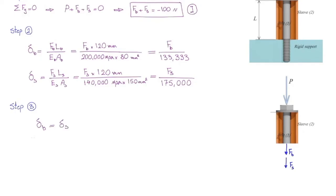And I can plug the values from the deformation that I got in step number two and write it like this. FB over 133,000 is equal to Fs divided by 175,000. And I can simplify that into this form. FB is 0.762 Fs.